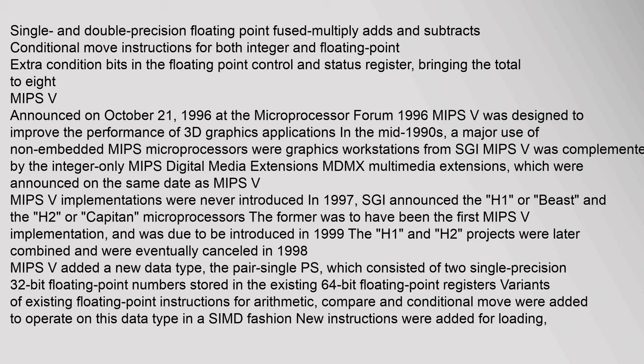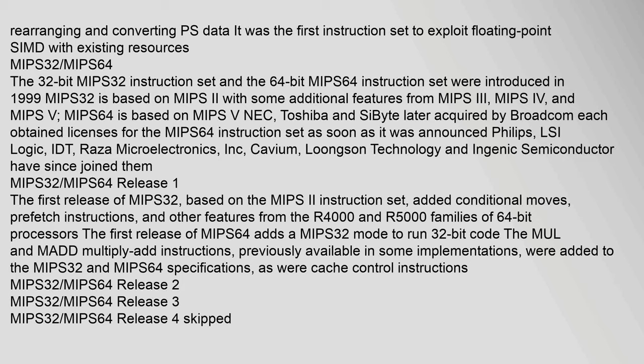MIPS-V implementations were never introduced. In 1997, SGI announced the H1 and H2 microprocessors; the H1 was to be the first MIPS-V implementation, due in 1999, but the projects were later combined and cancelled in 1998. MIPS-V added a new data type, the pair-single (PS), consisting of two single-precision 32-bit floating-point numbers stored in the existing 64-bit floating-point registers. It was the first instruction set to exploit floating-point SIMD with existing resources.